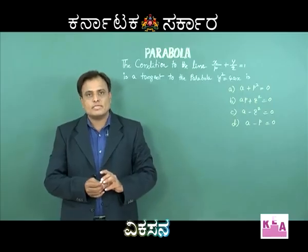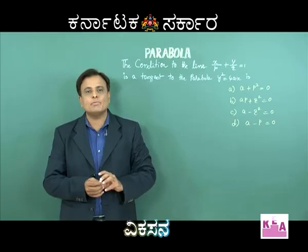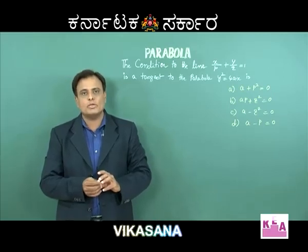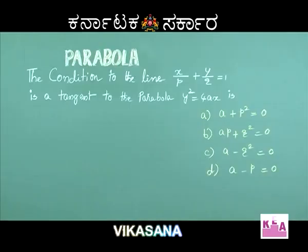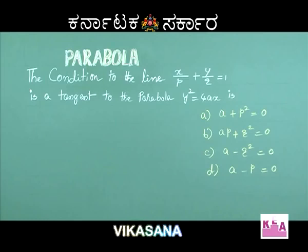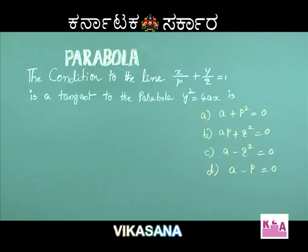Dear students, let us take an example from the topic parabola. Read the question: the condition for the line x/p + y/q = 1 to be a tangent to the parabola y² = 4ax. Options are: (a) a + p² = 0, (b) ap + q² = 0, (c) a - q² = 0, (d) a - p = 0.